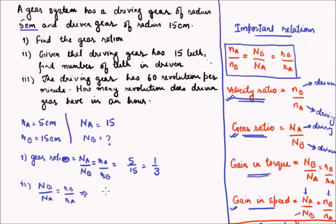Upon simplifying this we get Nb is equal to capital Na times Rb upon Ra. That would give us Na is 15, Rb rather is 15 cm and Ra is 5, which gives us 45 teeth. So the number of teeth in the driven gear will be 45.